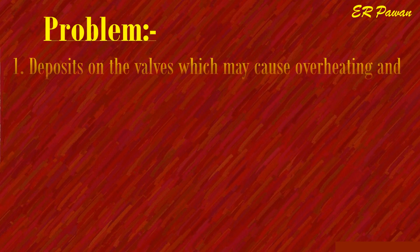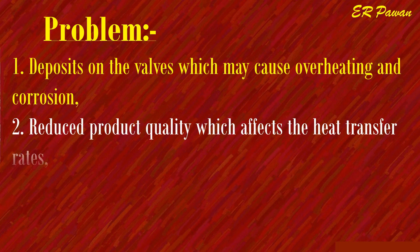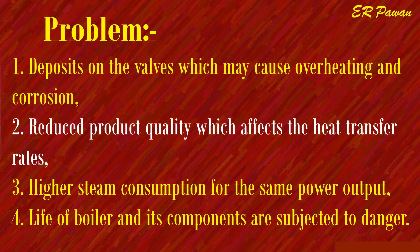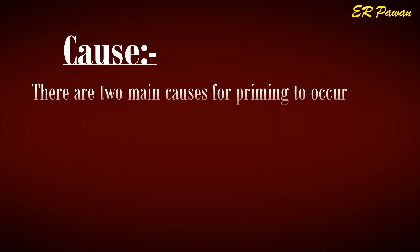Problems caused by priming: one, deposits on the valves which may cause overheating and corrosion, reducing product quality and affecting heat transfer rates; two, higher steam consumption for the same power output; three, the life of the boiler and its components are subjected to danger. There are two main causes for priming to occur in a boiler.